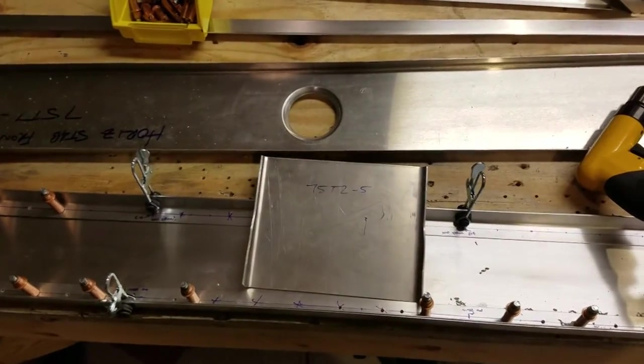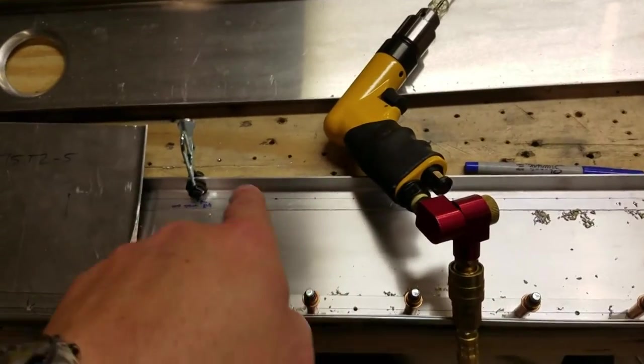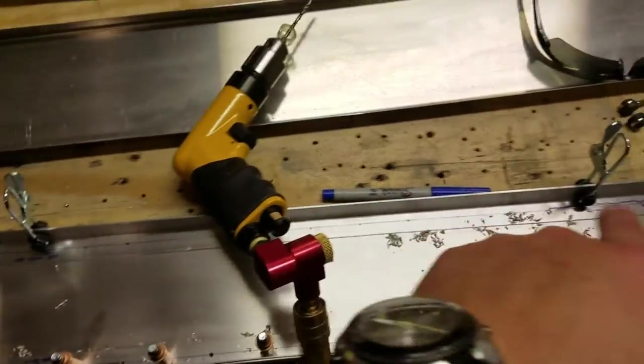This is part of the horizontal stabilizer I've been working on. You can see the doublers are mostly Cleco'd down. I'm still working on the bottom - that's actually the bottom even though it's the top in this view. It's actually the bottom of the spar.